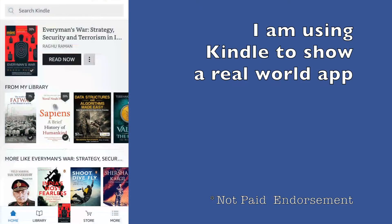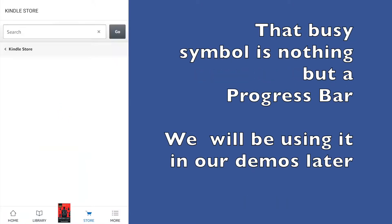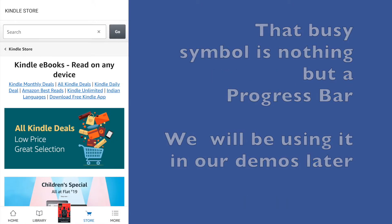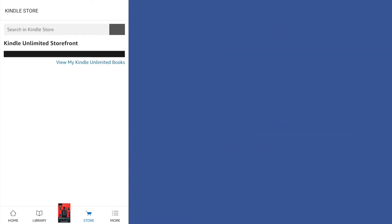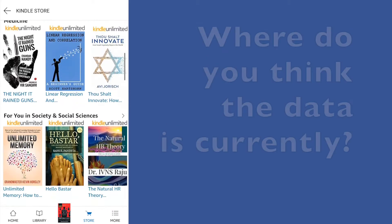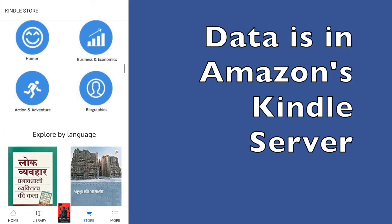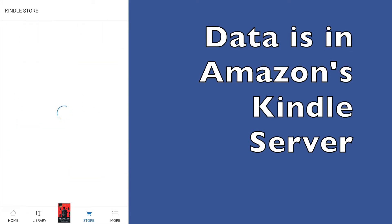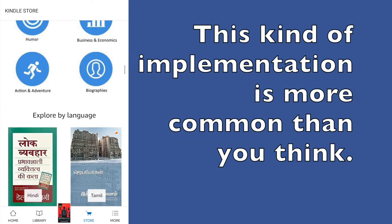Let me open a Kindle app. If I click on the store button, you basically see a busy symbol and some data seems to be getting loaded. You will see this kind of behavior every time in any of the apps — whenever the data is not present in the app at that moment, it shows some kind of a busy symbol and then after some time the data appears. It is nothing but the Kindle invoking a web service to fetch data from a remote server, which might be a server that Amazon has hosted on some cloud.